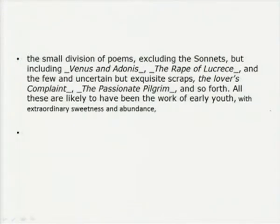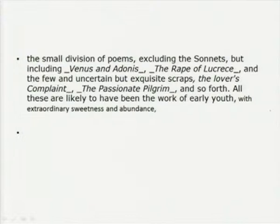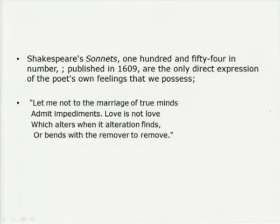When we look at a review of Shakespeare's poems — we will be doing his dramas later — we are here studying his contribution to poetry. Excluding the sonnets, we find he had written Venus and Adonis, the long poem Rape of Lucrece, and a few exquisite scraps in The Lover's Complaint, The Passionate Pilgrim, and so forth. All these are likely the work of early youth — perhaps immature — but even then we have extreme sweetness and abundance. When we come to the 154 sonnets of Shakespeare's whole oeuvre, we find they are a class apart.